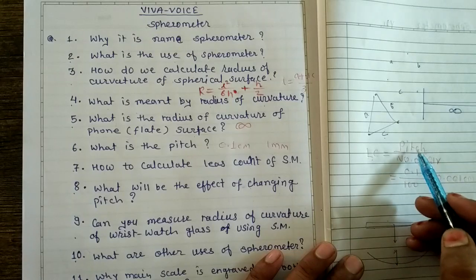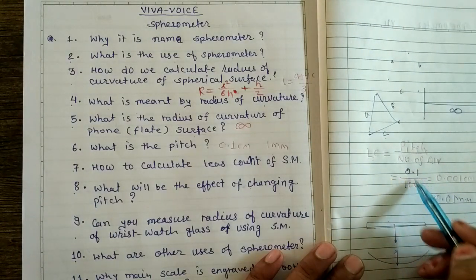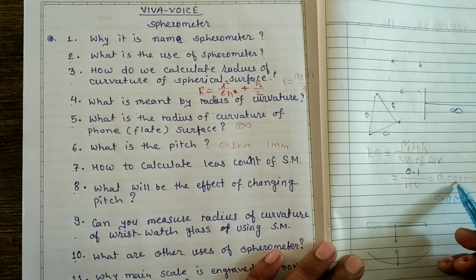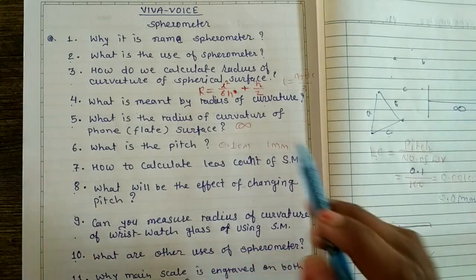Pitch is 0.1, number of divisions is 100. When you divide you will get 0.001 centimeter or 0.01 millimeter.